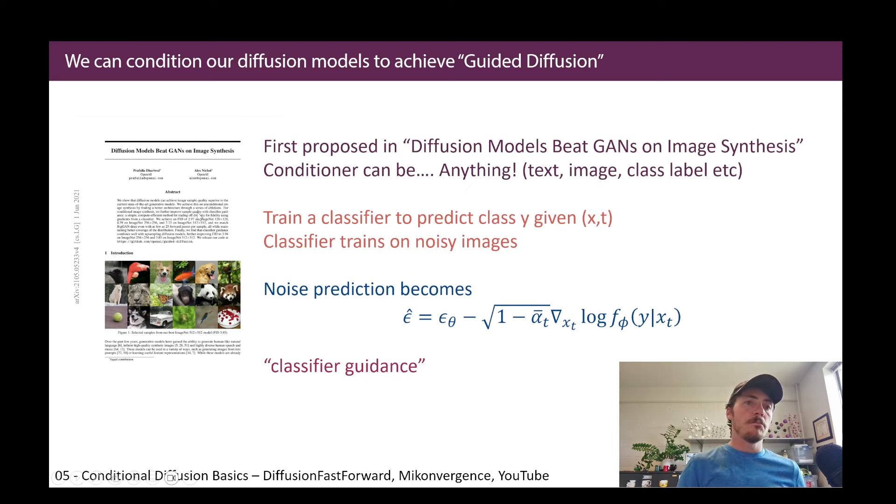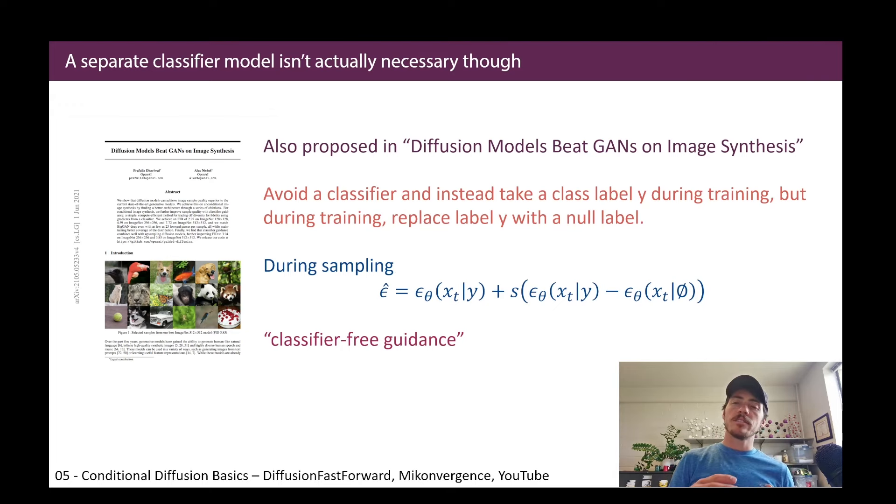So there's different ways that we can do guided diffusion. A lot of this comes from this paper, Diffusion Models Beat GANs on Image Synthesis. So for example, this was first proposed in that paper, and it can be conditioned off of anything, text, image, class label, whatever you want. So let's consider class label for a moment. If you train a classifier to predict a class given some X and T, for example, just like we can train a neural network to predict, is there a dog in this picture or not? Like that's the label, like dog versus cat. And then you take your classifier and you train it on noisy images. The noise prediction becomes epsilon theta minus 1 minus alpha T, the gradient X of T log F of the conditional probability of Y given X T. So this is called classifier guidance. In other words, the noise becomes about maximizing the likelihood of a class label prediction for some given X of T input.